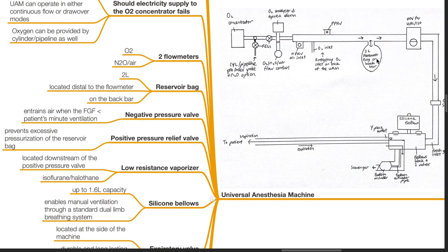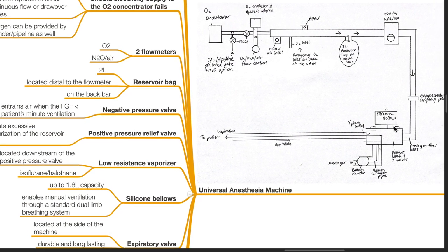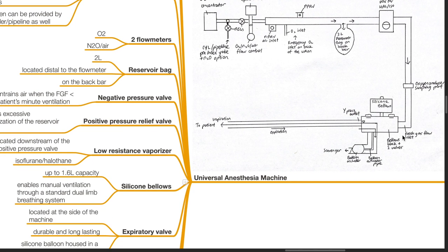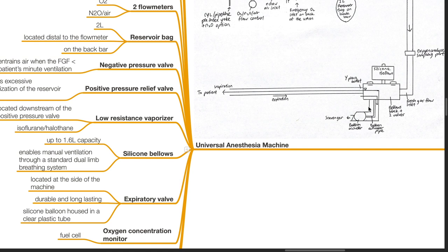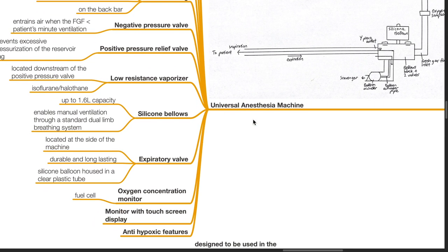A low resistance vaporizer located downstream of the positive pressure valve can be used for isoflurane or halothane. Silicone bellows can hold up to 1.6 litres and enable manual ventilation through a standard dual limb breathing system. An expiratory valve is located at the side of the machine. It is durable and long lasting. A silicone balloon housed in a clear plastic tube is present. An oxygen concentration monitor by a fuel cell is present, along with a monitor with a touch screen display and anti-hypoxic features.